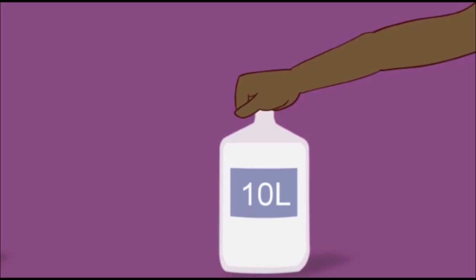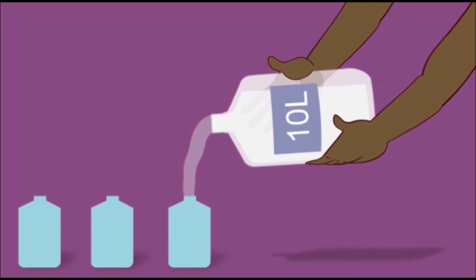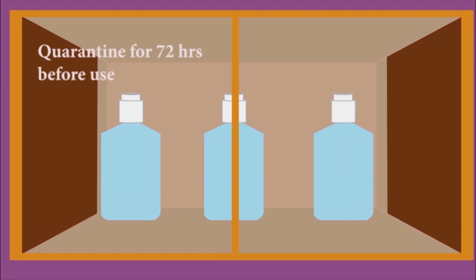Once mixed and happy with the concentration, divide up the solution into its final containers, for example 500 or 100 mL plastic bottles, and place them in quarantine for 72 hours before use. This allows time for any spores present in the alcohol or in the bottles to be destroyed.